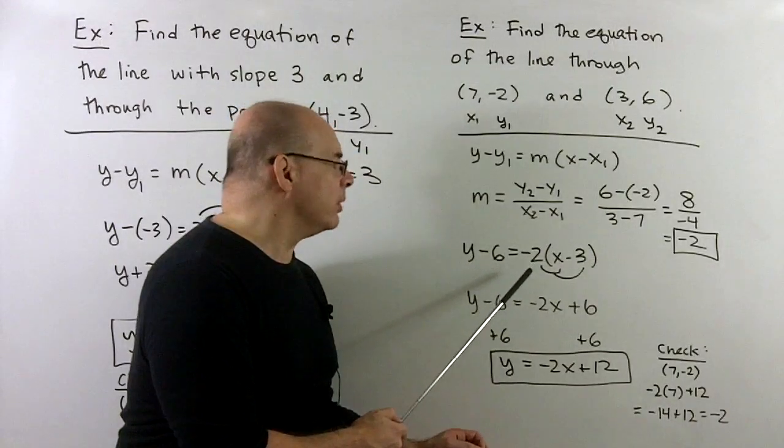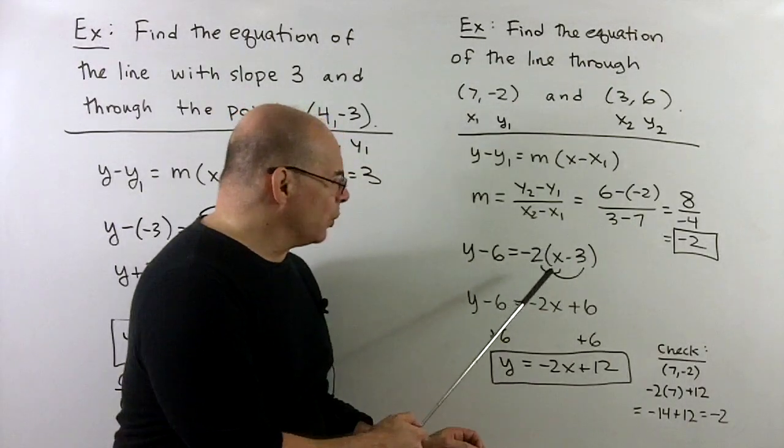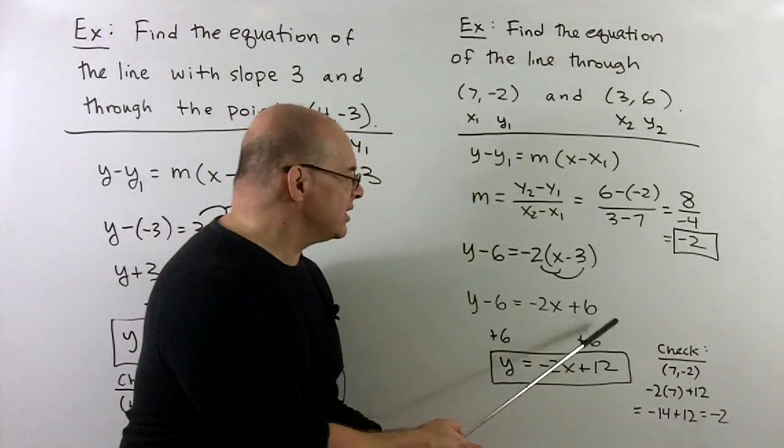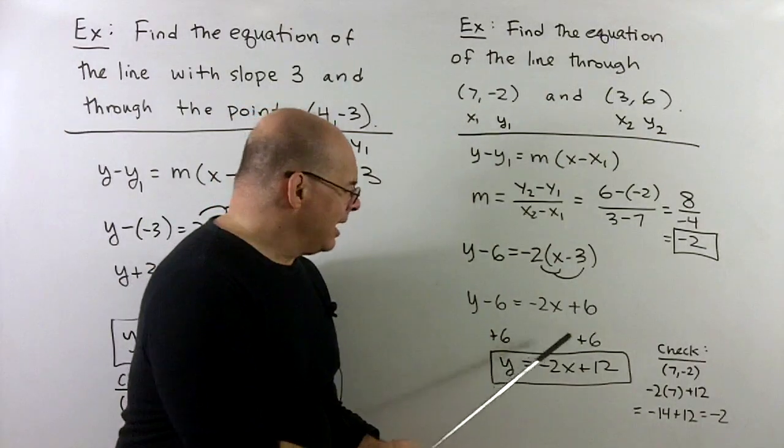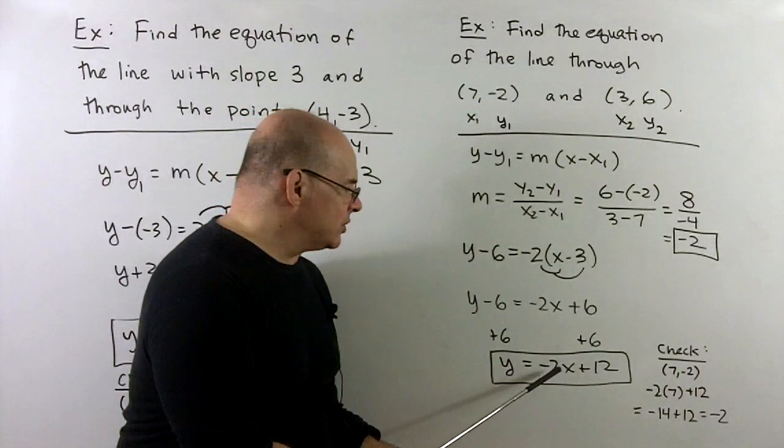Actually, we'll have a double negative here, but no problem. And so what do we do? We distribute. I get a minus 2x plus 6. We move the minus 6 to the other side as before. And then we get y equals minus 2x plus 12.